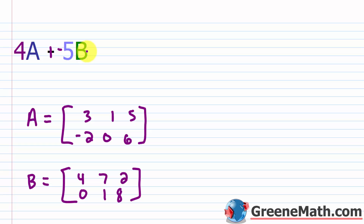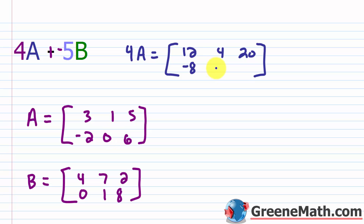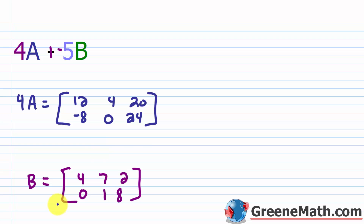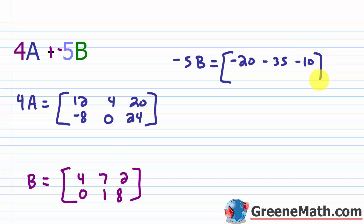For four times A, multiply every entry by four: four times three is twelve, four times one is four, four times five is twenty, four times negative two is negative eight, four times zero is zero, and four times six is twenty-four. For negative five times B: negative five times four is negative twenty, negative five times seven is negative thirty-five, negative five times two is negative ten, negative five times zero is zero, negative five times one is negative five, and negative five times eight is negative forty.